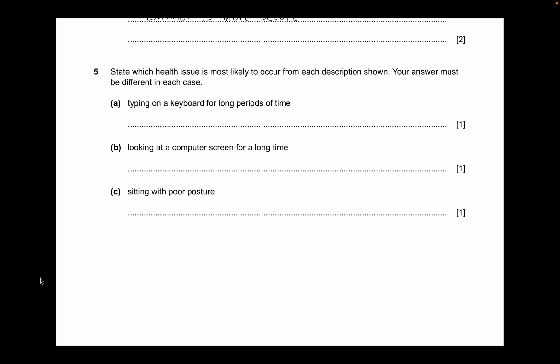The next question asks which health condition is most likely associated with each scenario — note your answers must be different. Typing on a keyboard for long periods of time: you can mention repetitive strain injury. Looking at a computer screen: you can mention eye strain. Sitting at a computer: you can mention a posture-related condition. Learn these three points and apply them in the paper.